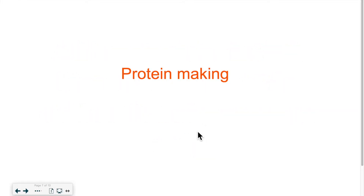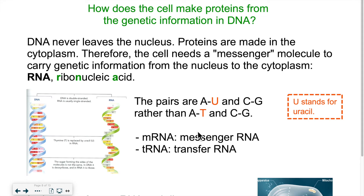Hello everyone. Welcome back for another lesson. In this lesson, we will talk about protein making. In the last lesson, we talked about what genes contain. They're contained in the chromosomes, but the genes contain basically the recipe to make proteins. Those proteins play various roles in your body and are made of amino acids assembled in a specific way. So let's talk about the whole process of making these proteins.